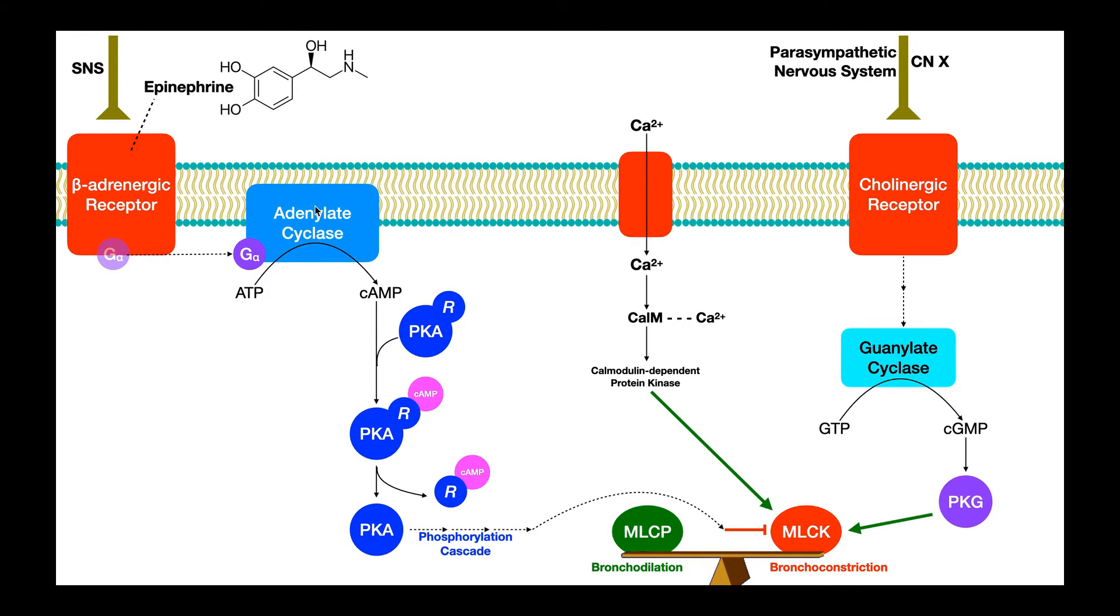Very similar to adenylate cyclase, except instead of catalyzing the reaction on ATP, it catalyzes it on GTP, and this enzyme is found free-floating in the cytoplasm instead of being membrane-bound. So guanylate cyclase catalyzes the conversion of GTP into cyclic GMP. And then cyclic GMP here, again another second messenger, has two functions here in the bronchioles.